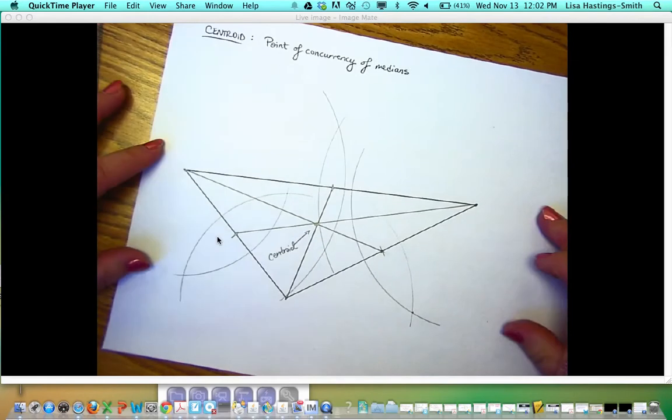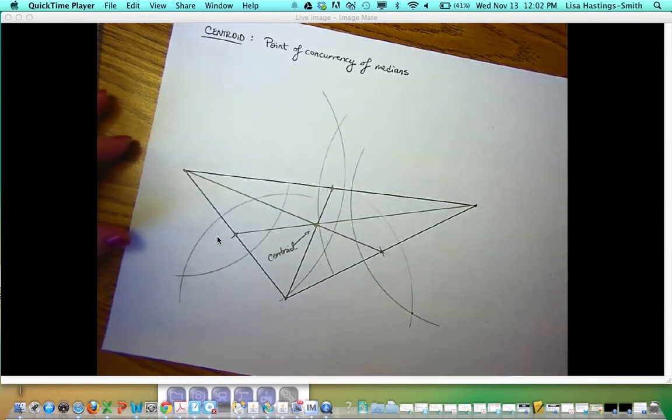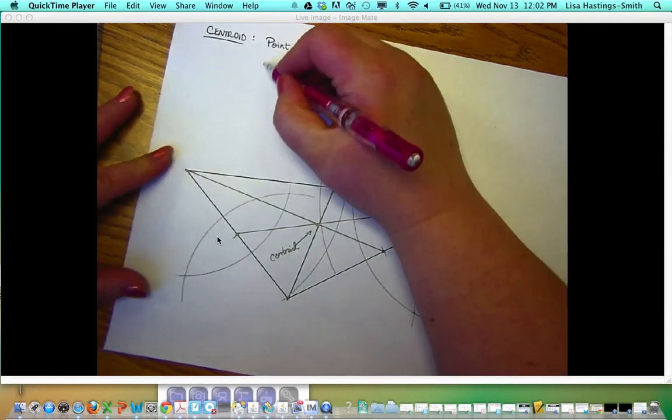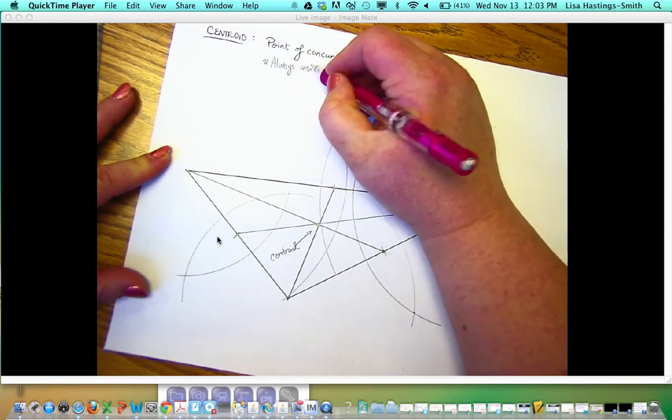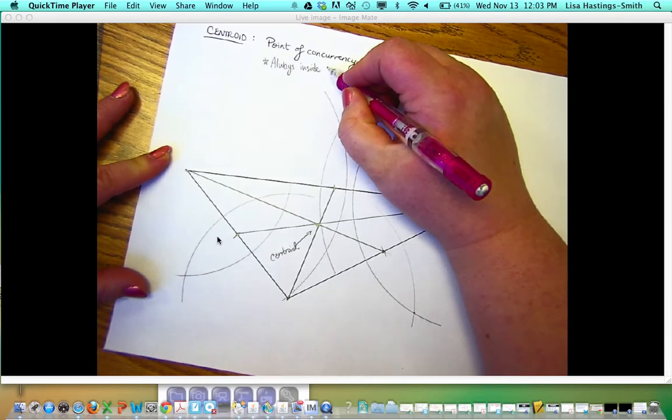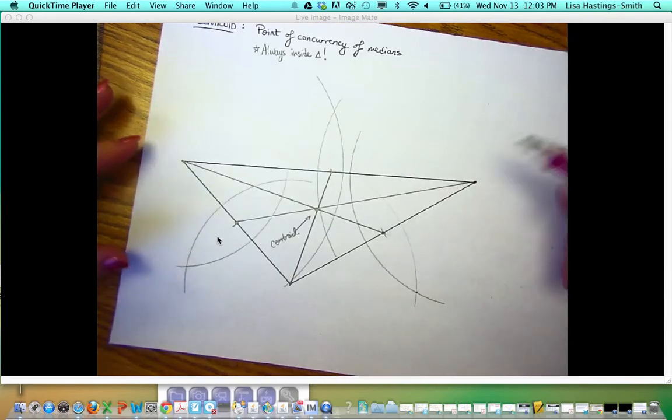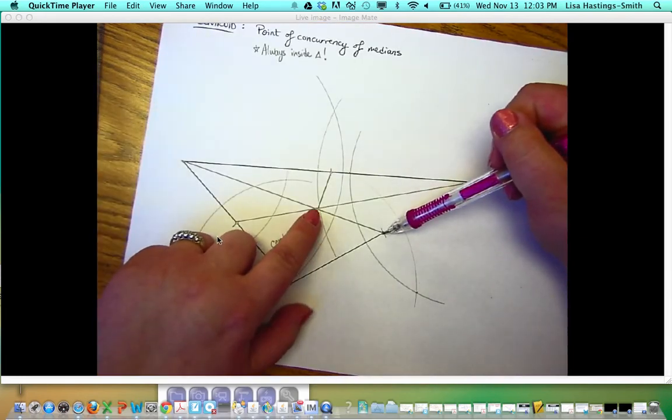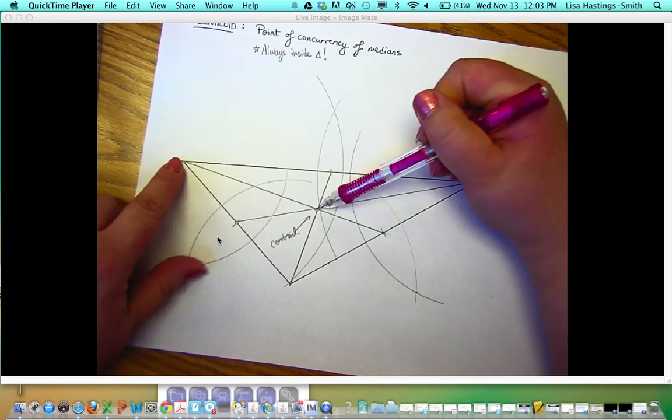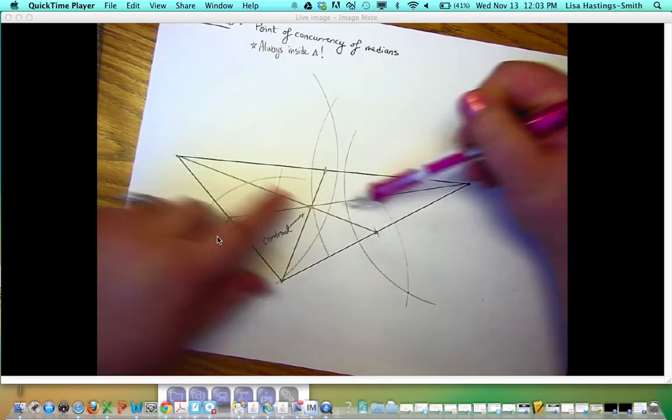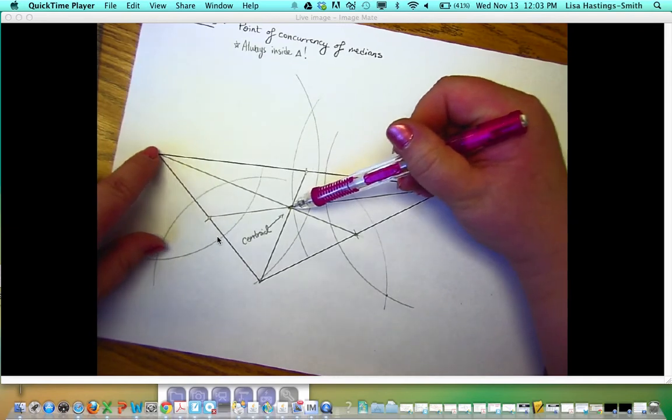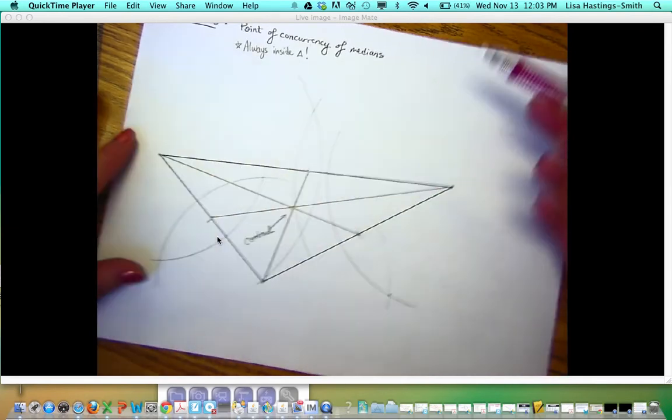Remember, the centroid is the balancing point of the triangle. So it's always going to be inside. It also has that nice property of the one-third, two-third idea. So this is one-third of its whole median, and this is two-thirds of the whole median, which makes this a one-to-two ratio or a two-to-one ratio.